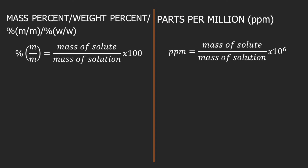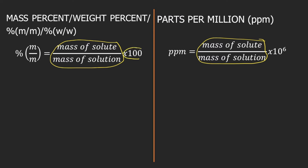The conversion between mass percent and parts per million is easy because both formulas share mass of solute divided by mass of solution. The only difference is that for mass percent you multiply by 100, and for PPM you multiply by 1 million or 10 raised to 6.